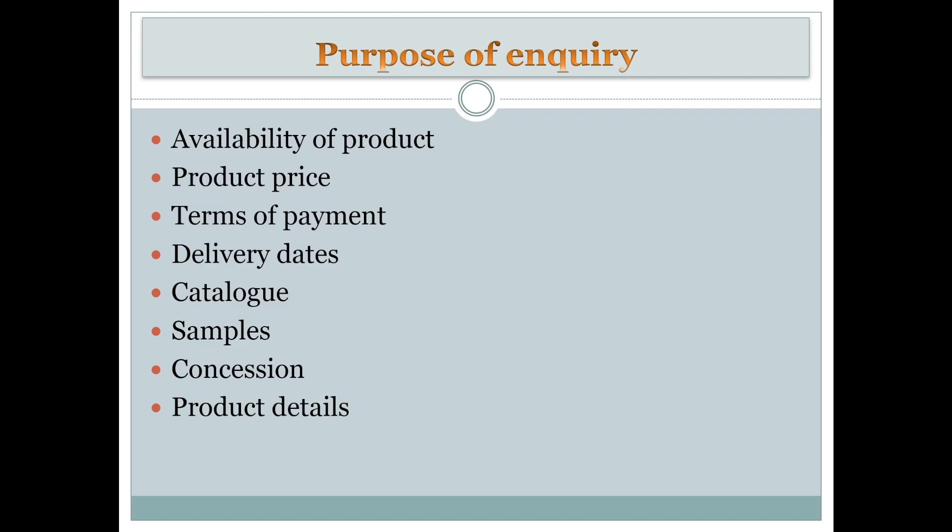The third purpose is terms of payment. You want to inquire how you can pay for the product you want to get. For example, maybe you want to pay through checks, money transfer online, or cash on delivery, or any other kind of payment method. You need to agree on the terms between the two companies to make sure the process runs smoothly.